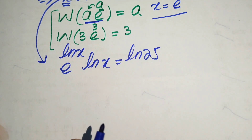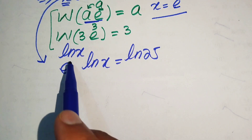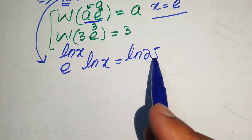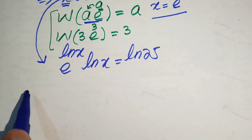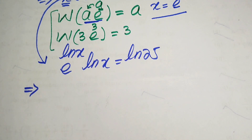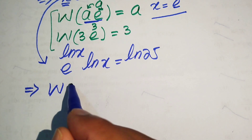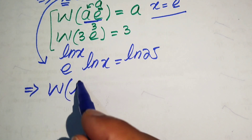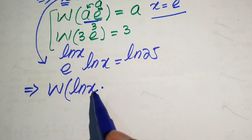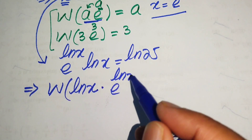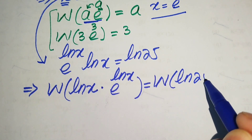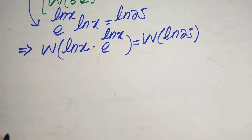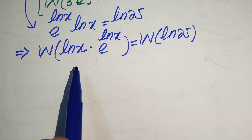The exponent of e is now multiplied by log x on the left-hand side, and the right-hand side is log of 25. We are now ready to apply the Lambert W function to both sides, giving us W(log x · e^(log x)) equals W(log 25).